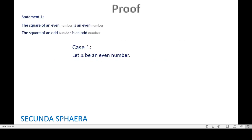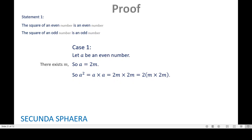We start with the first case. Let a be an even number. Because it is even, we can say that a equals 2 times m, where m is some integer. We then have a squared equals a times a, which is the definition of a square. Using a equals 2m, we get a squared equals 2m times 2m. By the associative property of multiplication, we can factor out a 2, so a squared is the double of the quantity m times 2m. Therefore a squared is an even number.